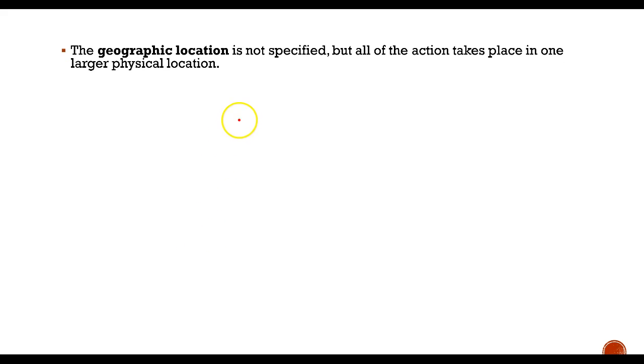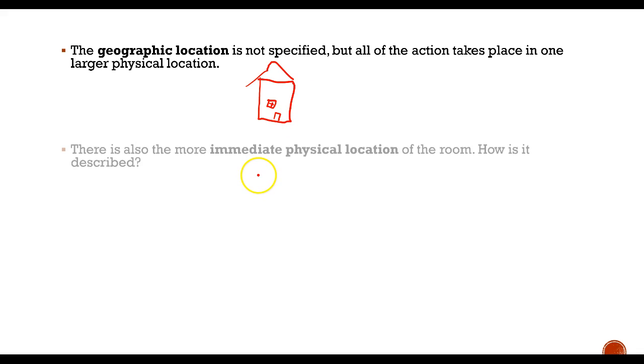The geographic location of story of an hour isn't specified, but we know that the story takes place in one large physical location, right? Mrs. Mallard's house. This is my best house. Okay. It's not very good. So all the action takes place in the house and that's very significant because the house is the domestic sphere of the woman and of Mrs. Mallard. And she literally never leaves the house. Nobody leaves the house except for Brentley Mallard. And I think that tells us a lot about Mrs. Mallard's life and her responsibilities.